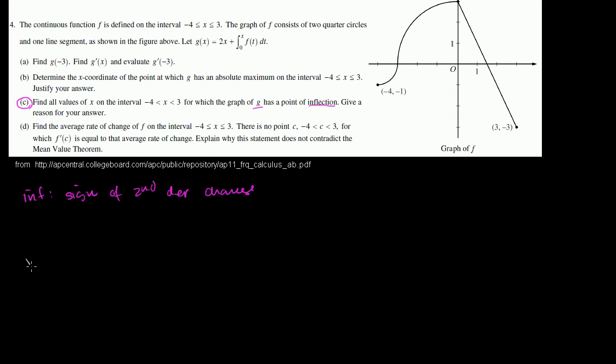So if you have a curve that looks something like this, you'll notice that over here the slope is negative, but it's increasing — it's getting less negative, then it goes to 0, then it keeps increasing. The slope is increasing all the way to there, and then it starts getting less positive, so it starts decreasing. So this right over here is a point of inflection. The slope has gone from increasing to decreasing.